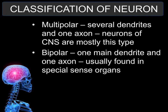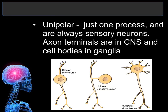Bipolar neurons are neurons that have one dendrite and one axon, and they are usually found in the special sense organs. The last type is the unipolar, which has just one process and are always sensory neurons. Their axonal terminals are in the central nervous system, and the cell body is in the ganglia.